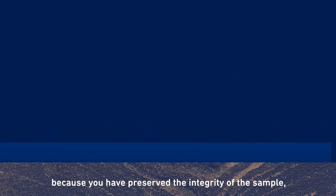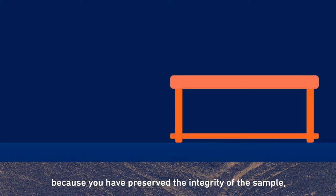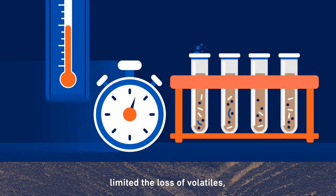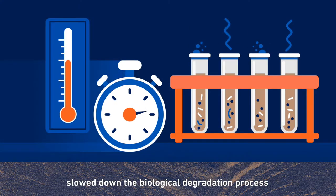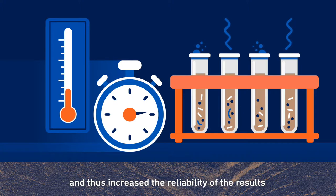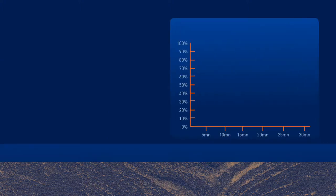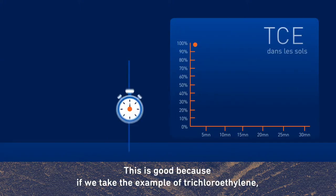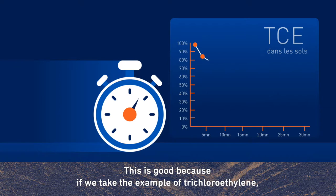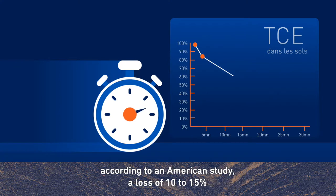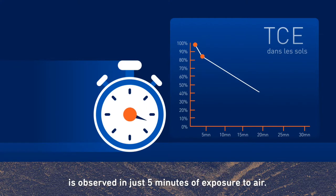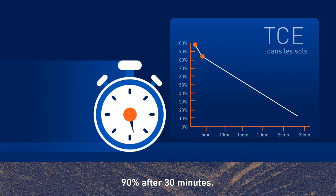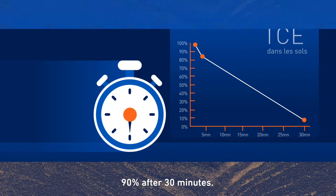Mission accomplished: you have preserved the integrity of the sample, limited the loss of volatiles, and slowed down the biological degradation process, thus increasing the reliability of the results. For example, with trichloroethylene, according to an American study, a loss of 10–15% is observed in just 5 minutes of exposure to air, and 90% loss after 30 minutes.